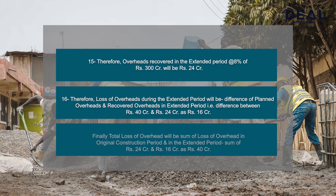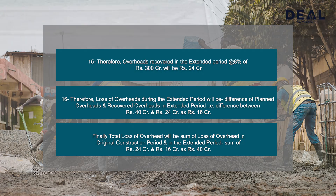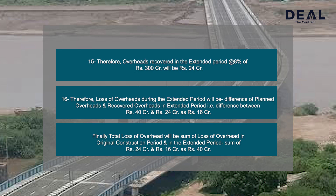Finally, total loss of overheads will be the sum of loss of overheads in the original construction period and in the extended period: Rs. 24 crores + Rs. 16 crores = Rs. 40 crores total.